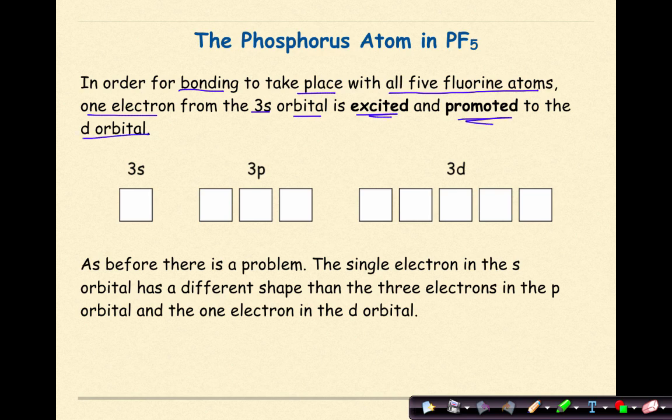one electron from the 3S orbital is excited and promoted to the D orbital. So we're going to assume that in front of this 3S, we have our 1S2, our 2S2, and our 2P6, as you can see in your notes. So the second electron in the 3S is going to get promoted, so we'll see the electrons in 3P, and then finally we'll see this last electron right here in 3D.